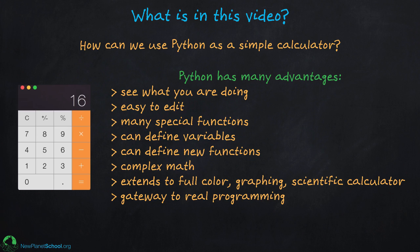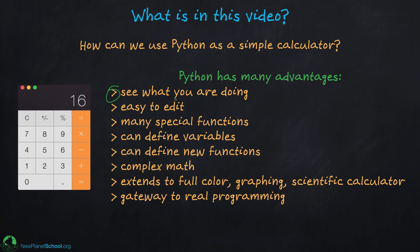Python has a lot of advantages. One of them is you can see better exactly what you're doing. Notice in a basic calculator, every time you type a number, everything you did before disappears. Python allows you to see exactly what you're doing. You can also edit using the arrow keys — you can go back and make changes and try different things.